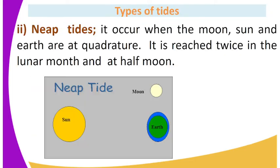The second type of tides is the neap tide. It occurs when the moon, the sun, and the earth are at quadrature. It is reached twice in the lunar month and at half moon.